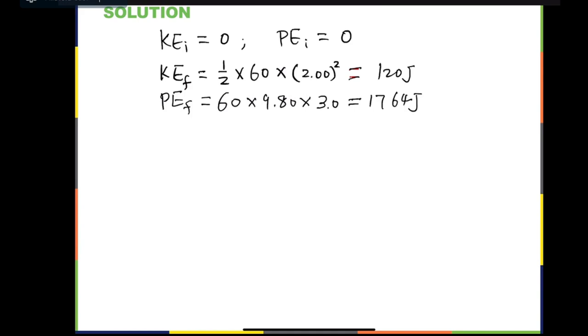So work required is equal to the total change in both energies, which is equal to 120 plus 1,764. The answer is 1,884 joules.